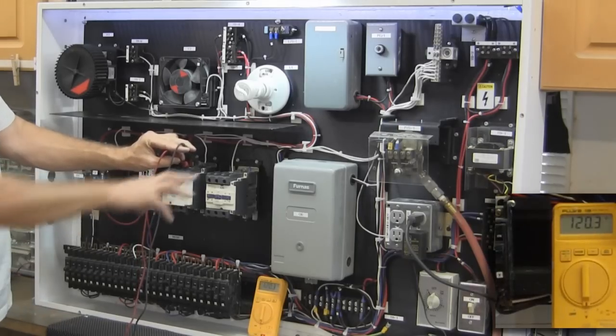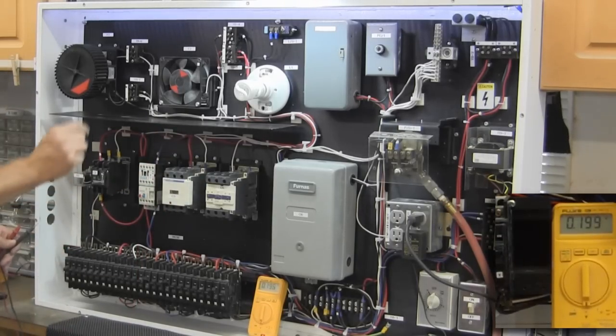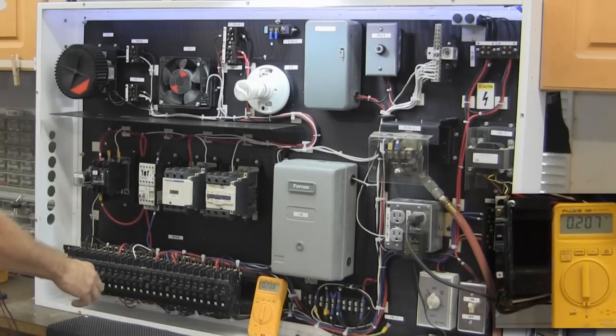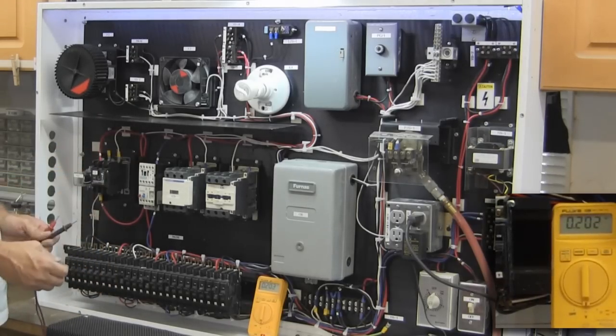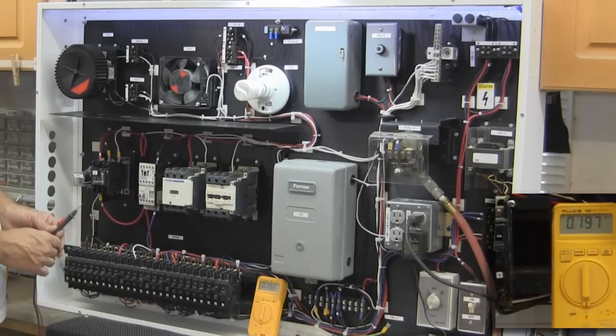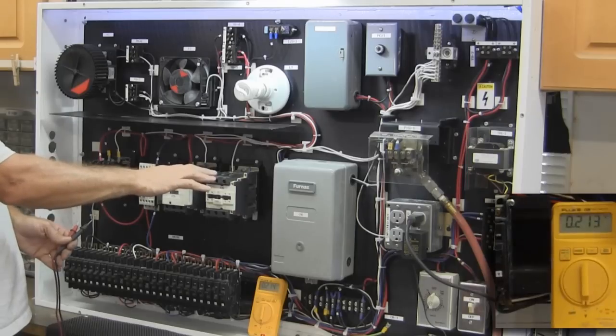And then on my contactor five, which is switch J, now I've got the voltage going into that. And that leads me to another thing I wanted to show you is that these are 120 volt coils.